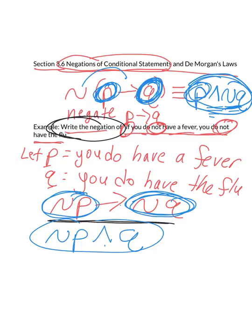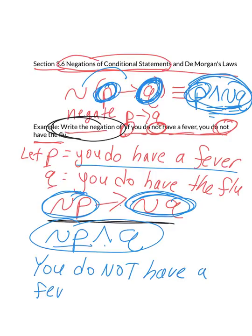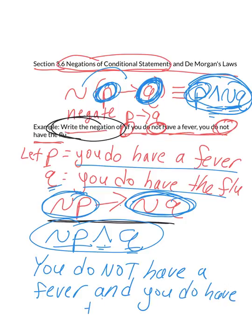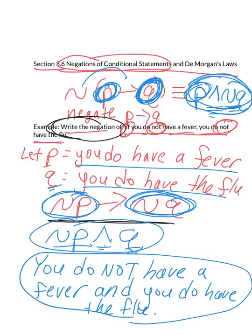Let's rewrite this out in words. Not P means you do not have a fever. You're negating P, so you do not have a fever. Up arrow for and. Regular Q was you do have the flu. And you do have the flu. So what has the opposite meaning of if you do not have a fever, you do not have the flu? Well, here it is right here. You do not have a fever and you do have the flu.